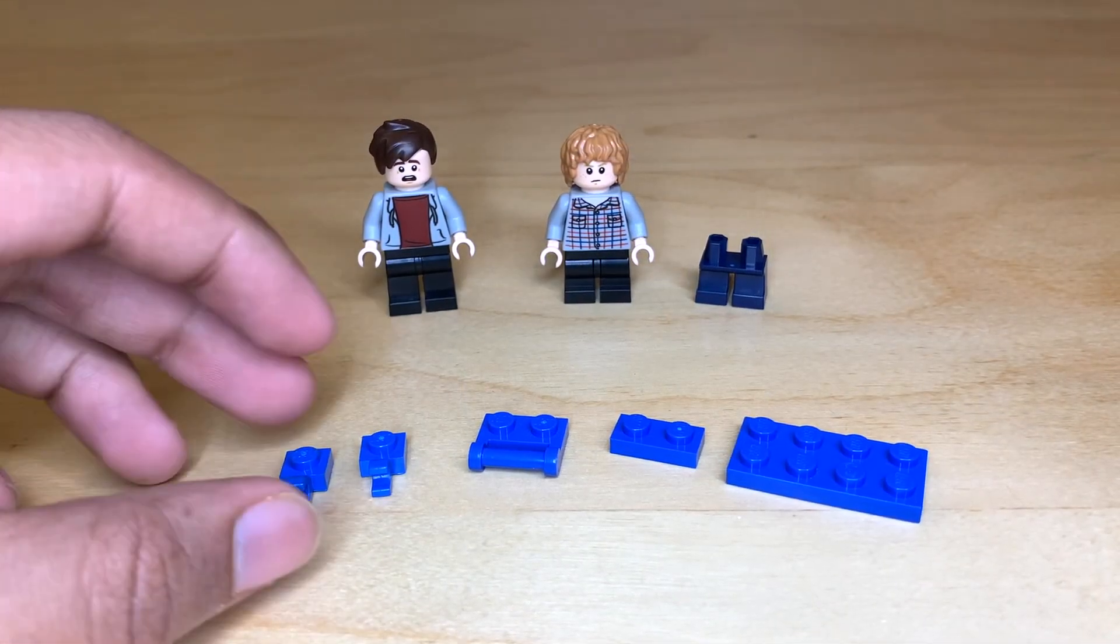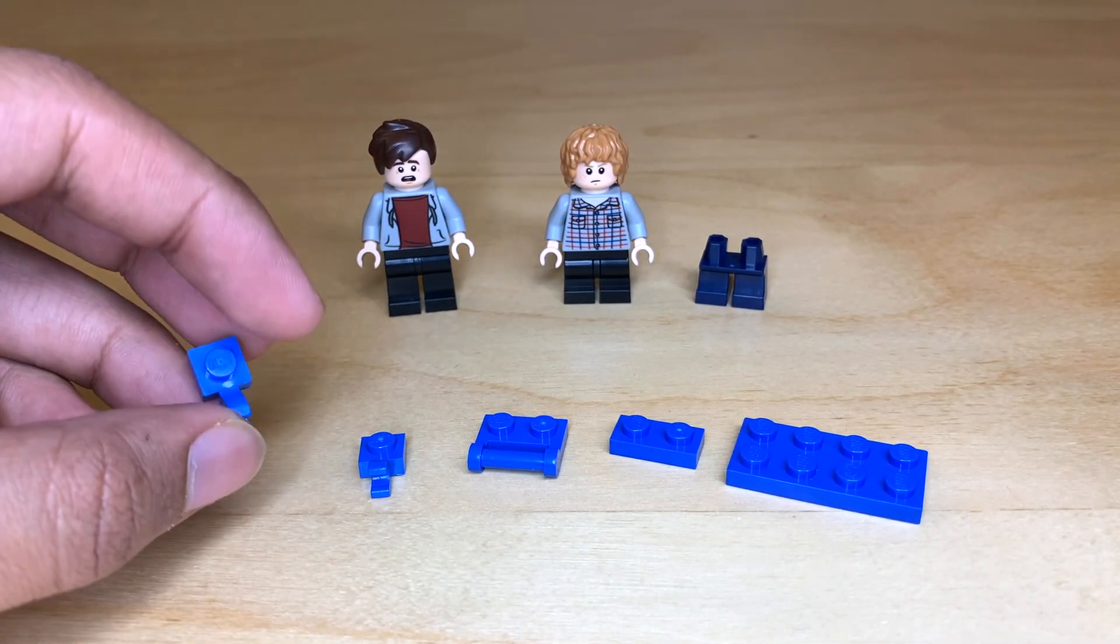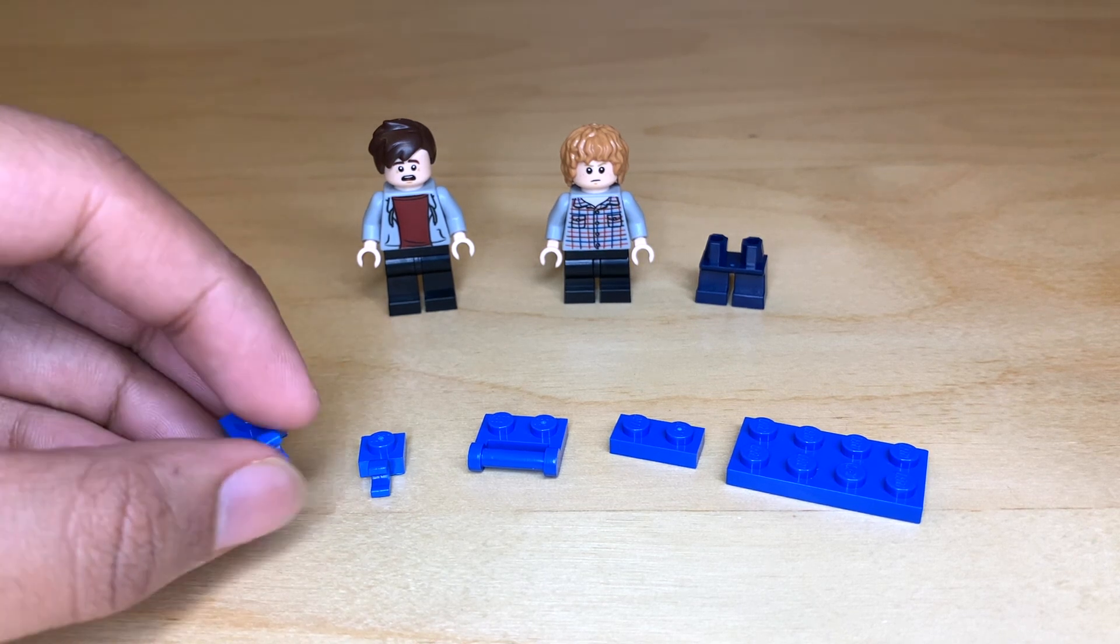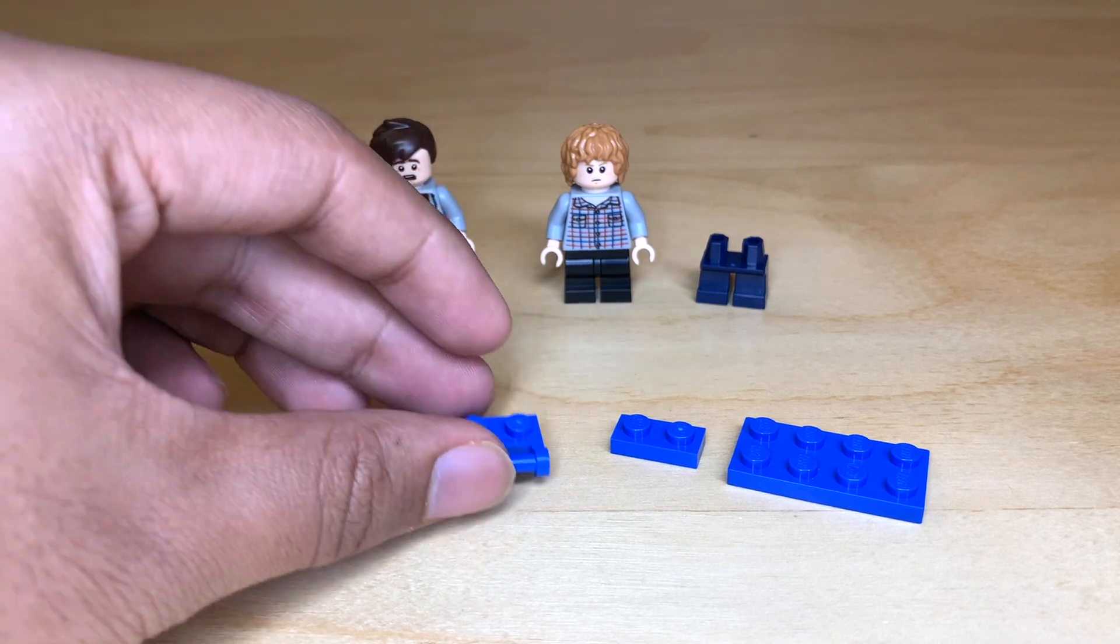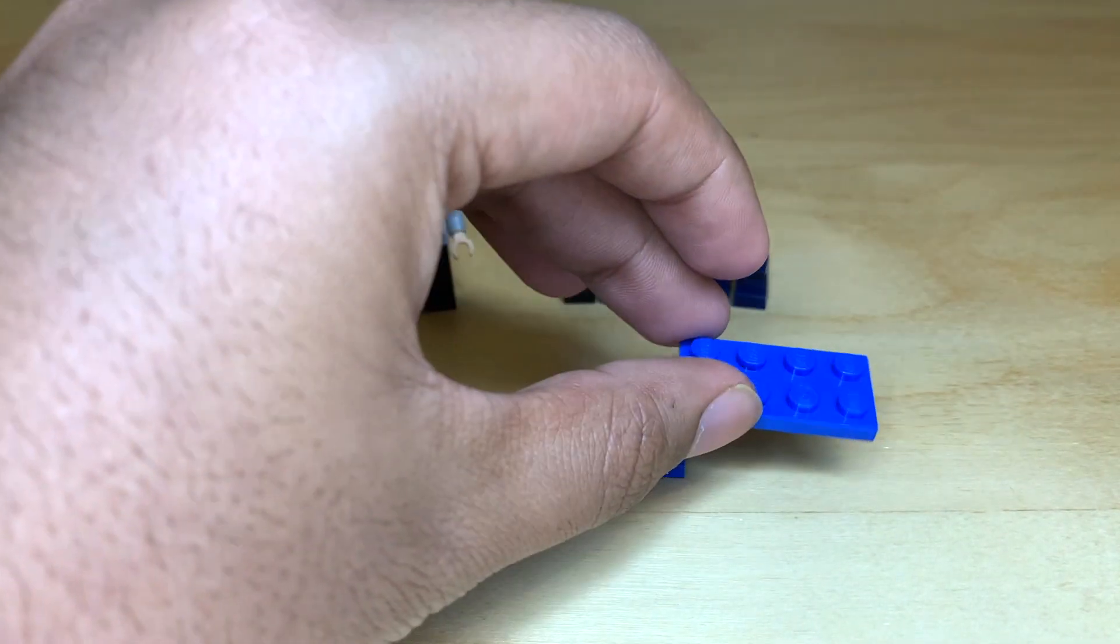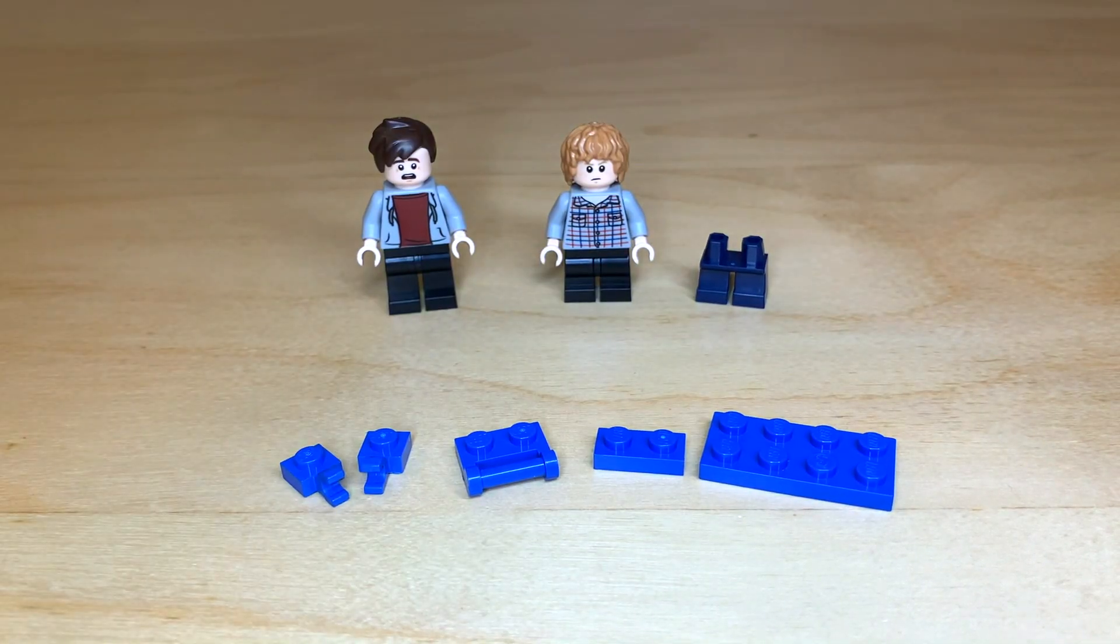Here are the pieces you're going to need for this modification. You're going to need two of these one-by-one blue plates with a vertical clip, not a horizontal clip. You're going to need a one-by-two plate with a bar. You're going to need a regular one-by-two plate, and then you're going to need a two-by-four plate. All of these pieces are in LEGO's regular blue color.